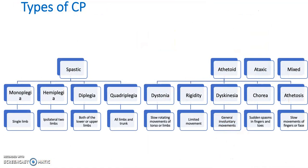Moving on now to the types of cerebral palsy. There are four main types: spastic, athetoid, ataxic and mixed. Spastic itself can be split into monoplegia, hemiplegia, diplegia and quadriplegia. Monoplegia means one single limb is affected; hemiplegia is ipsilateral two limbs; diplegia is either both lower or upper limbs; and quadriplegia is all limbs and the trunk. Athetoid can be split into dystonia, rigidity, dyskinesia, chorea and athetosis. Dystonia is slow rotating movement of the torso or limbs; rigidity is limited movement; dyskinesia is general involuntary movements; chorea is sudden spasms in fingers and toes; and athetosis involves slow movements of the fingers or face.